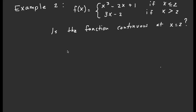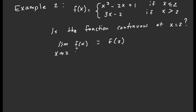Let's take a look at our second example. f of x equals this piecewise function, and it asks: is the function continuous at x equals two? We apply our definition for continuity: what is the limit as x approaches two of this function, and if the limit exists, is it equal to f of two, the function value at two? Since this is a piecewise function that crosses over at two, we'll figure out our left and right hand limits.